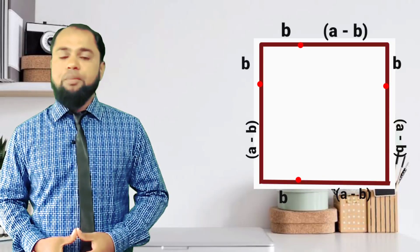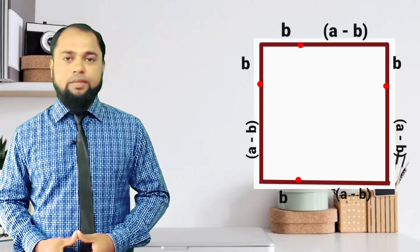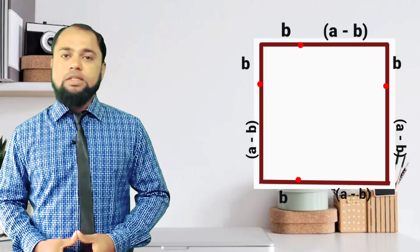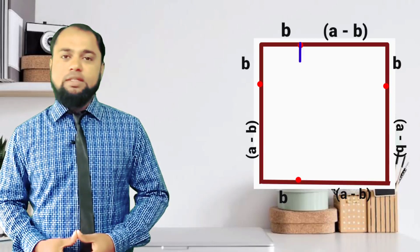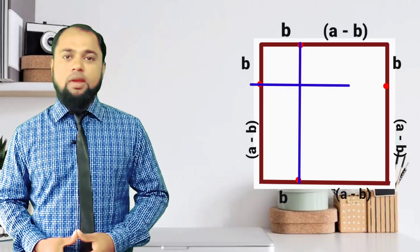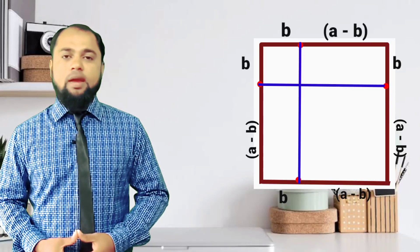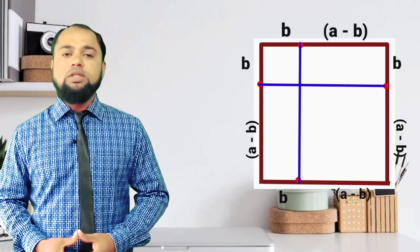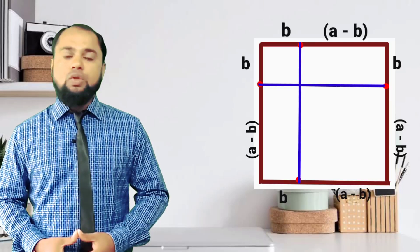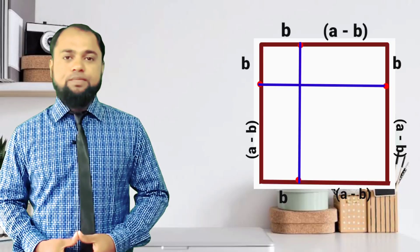Mark the points on the remaining three sides of that square such that the lengths are a minus b and b, as we prepared on the first line. Join those points. Now we have got two squares.